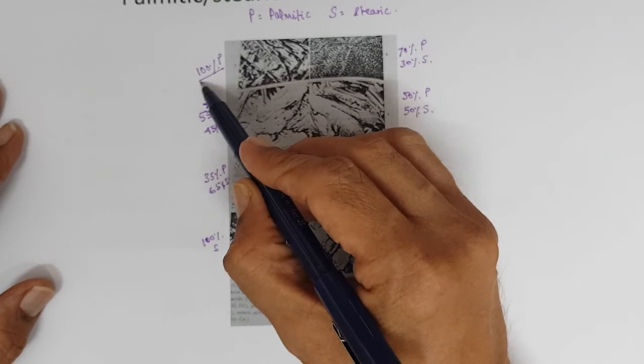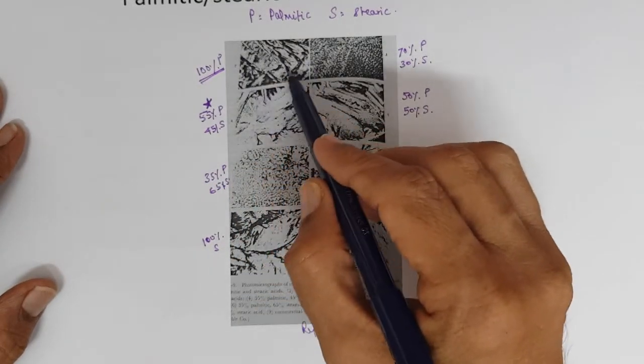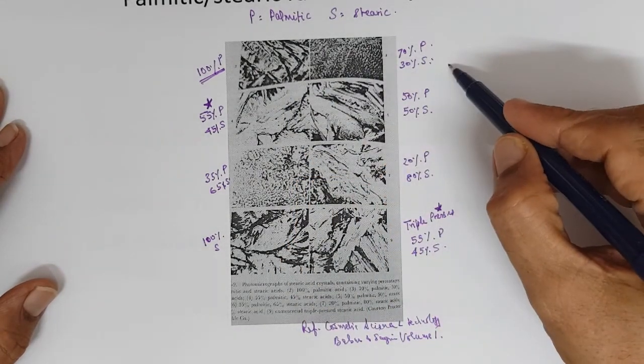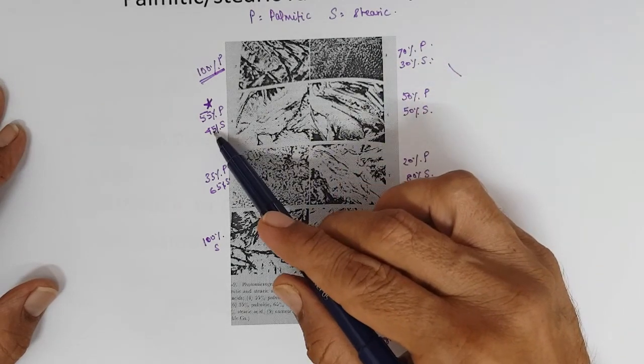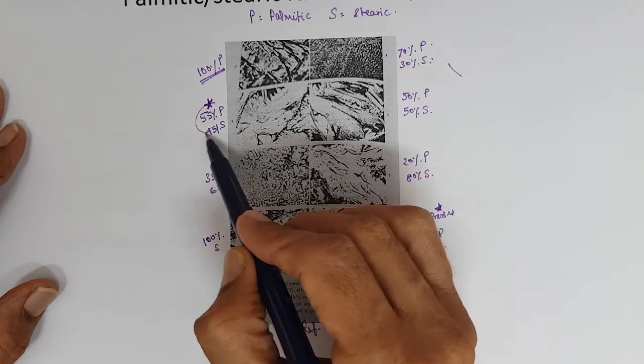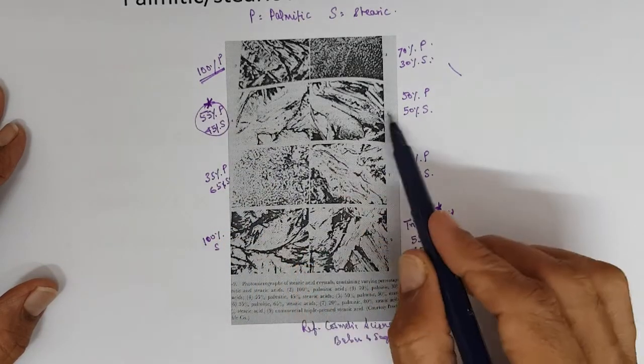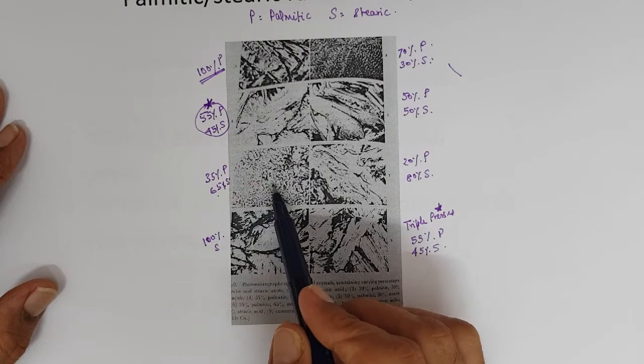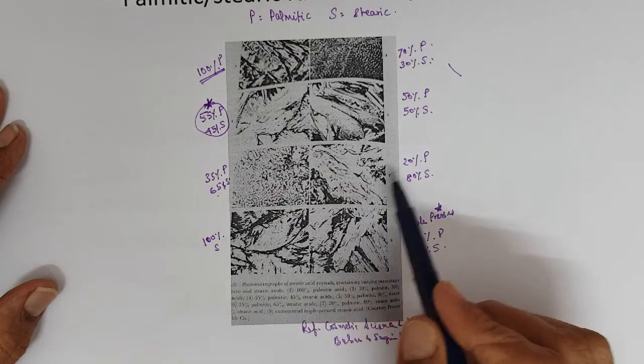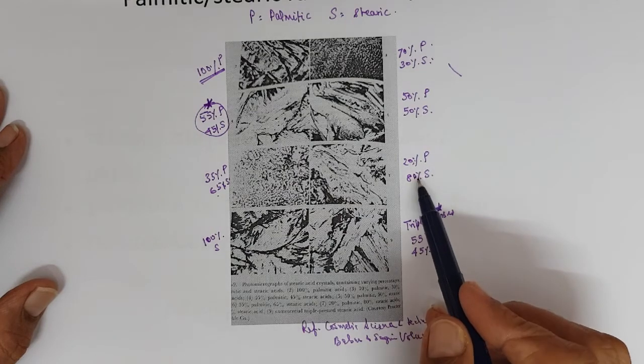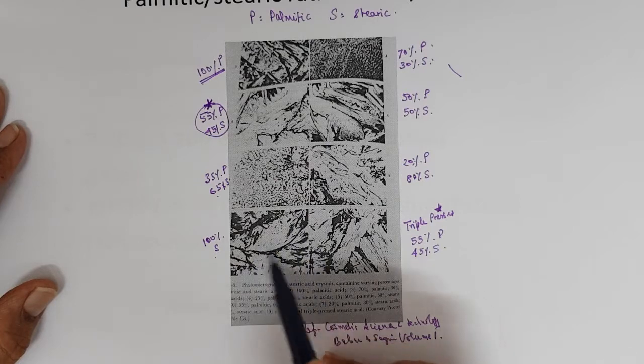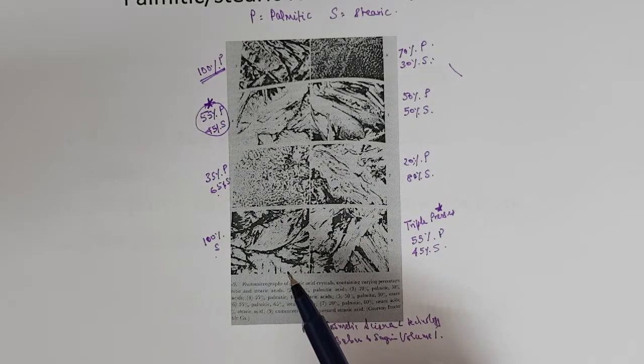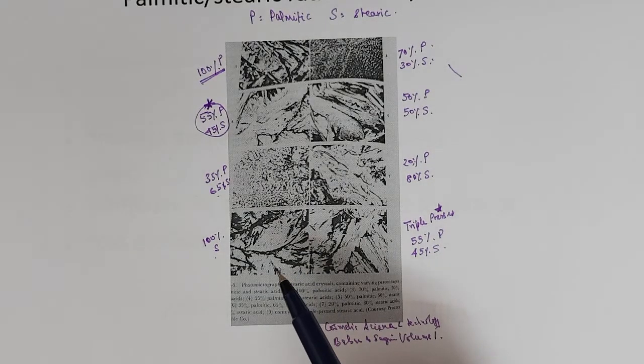Reference cosmetic science and technology Balsam and Sagarin volume 1, it is given here. When it is 100% palmitic acid, the crystal size of the material is like this. If it is 70-30, the size reduces. Crystal size. 55-45, size starts increasing. 50-50, the size is totally different. Then again 65-35, it is very grainy small size. Then slowly it tightens, starts increasing. 20 palmitic 80 stearic, and 100 stearic, the particle size looks totally different.